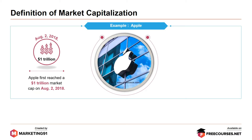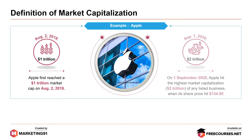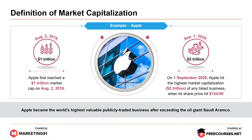Example: Apple first reached a $1 trillion market cap on August 2, 2018. On September 1, 2020, Apple hit the highest market capitalization of $2 trillion of any listed business when its share price hit $134.8. Apple became the world's highest valued publicly traded business after exceeding the oil giant Saudi Aramco.